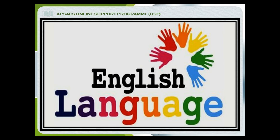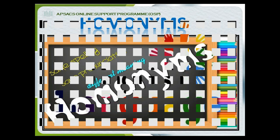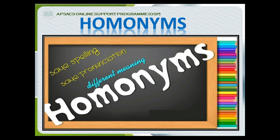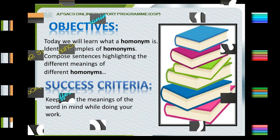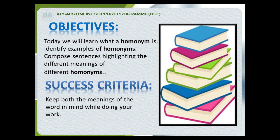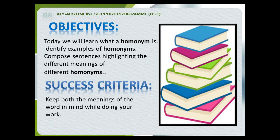This is an English language lesson. Our topic for today is homonyms. Our objectives for today's lesson: we will learn what a homonym is, identify examples of homonyms, and compose sentences highlighting the different meanings of different homonyms. Our success criteria: keep both the meanings of the word in mind while doing your work.